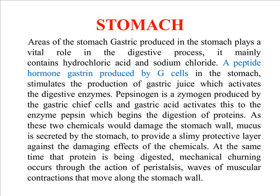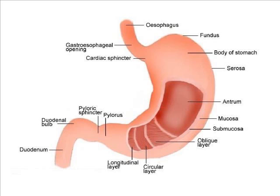Gastric acid produced in the stomach plays a vital role in the digestive process. It mainly contains hydrochloric acid and sodium chloride. A peptide hormone gastrin is produced by G cells in the stomach, which stimulates the production of gastric acid and activates digestive enzymes. Pepsinogen is a zymogen produced by gastric chief cells, and gastric acid activates it. The most important function of the stomach is storage of food. It also secretes digestive enzymes responsible for the conversion of complex molecules into simple molecules. The HCl secreted by the stomach is also responsible for prevention of growth of microorganisms. The stomach structure runs from the esophagus through the fundus, body of the stomach, serosa and greater curvature, lesser curvature, and to the duodenum.